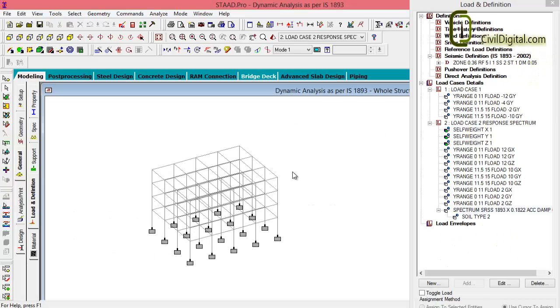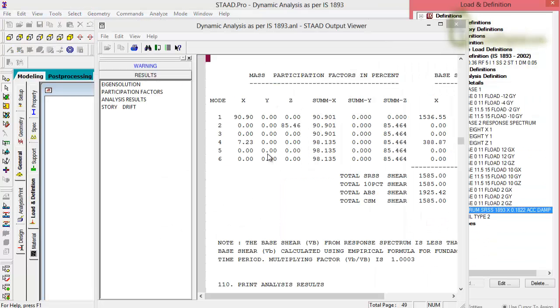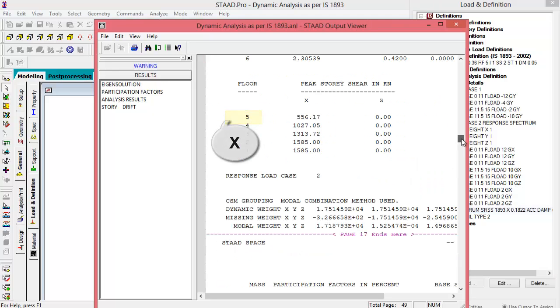So let us take a look at the STAAD file and go to the report file. In our example, the mass participation factor for the first mode is 90.9. So the value for X is 90.9. Then the modal mass used for calculating the base shear will be the modal weight in the X direction, that is 1.7187 into 10 to power 4.